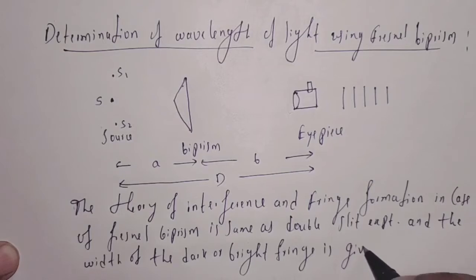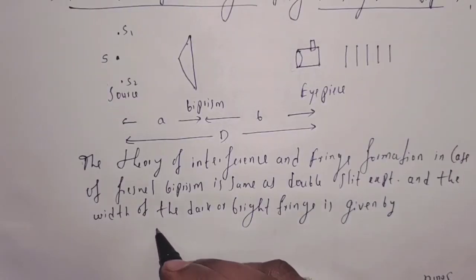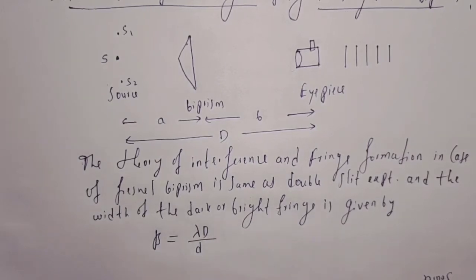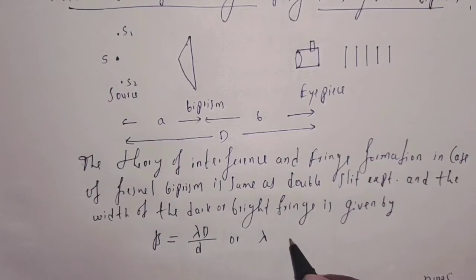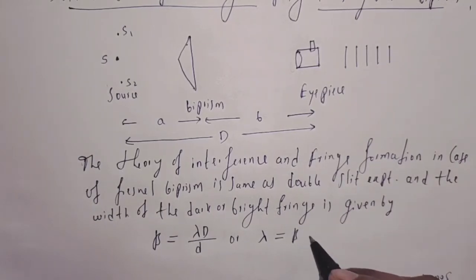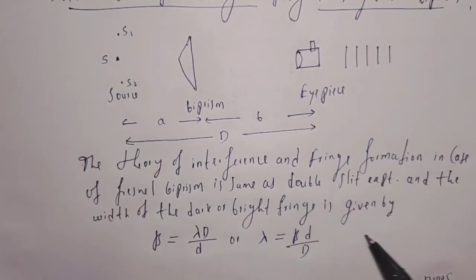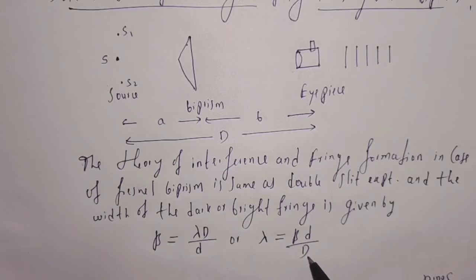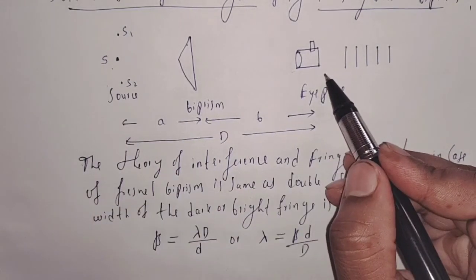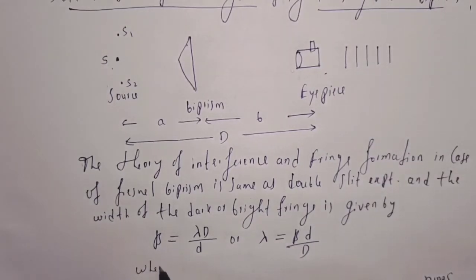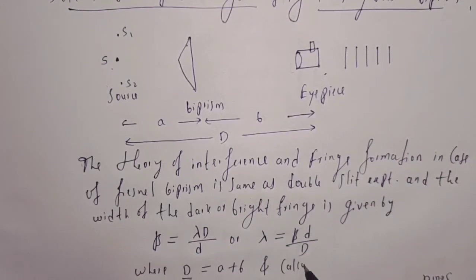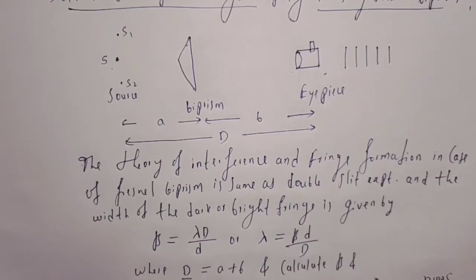The width of the dark or bright fringe is given by: beta equals lambda times capital D divided by small d. Or we can write: lambda equals beta times small d divided by capital D. By observing the experimental setup, we can calculate capital D, which is the distance between source and eyepiece. That is, capital D equals a plus b. We need to calculate beta and small d.